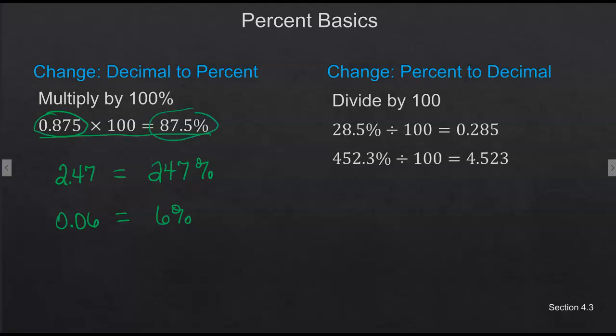If it's not a whole number percent, then you have to have that decimal in there. Next, we're changing a percent to a decimal — basically going backward from what we just did. This time we divide by 100, take the percent symbol off, and move the decimal two places to the left. So 28.5 percent is 0.285, and 452.3 percent is 4.523. Any number one or above will be 100 percent or more.